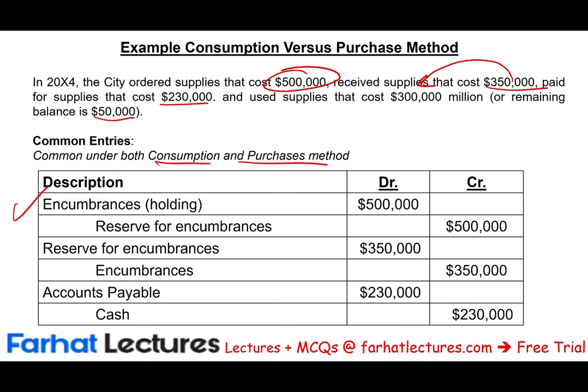Once we receive the supplies — we received $350,000, not the full amount — we reverse $350,000 of the $500,000 encumbrance. Then we paid $230,000 for those supplies: debit accounts payable, credit cash $230,000. Those are the entries we make regardless of which method we are using.